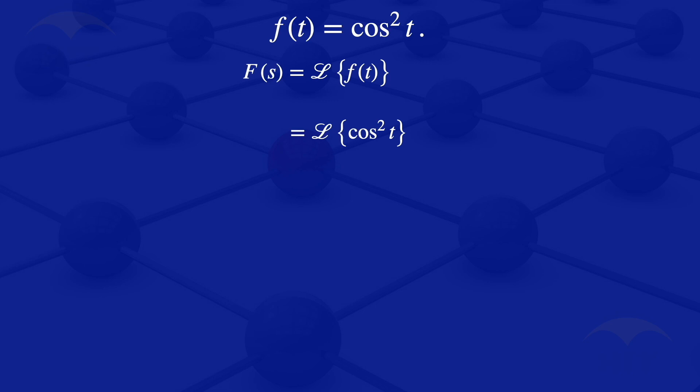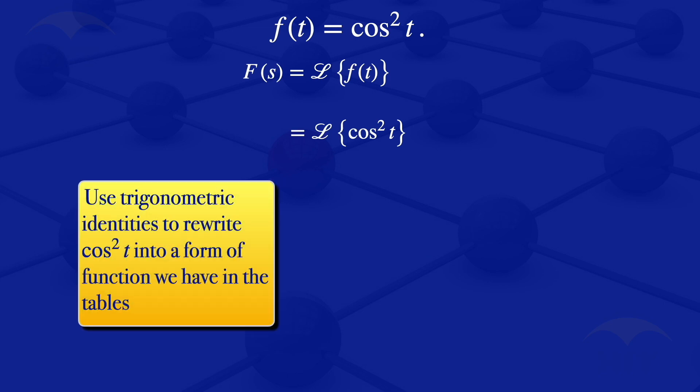When we look at our tables, we don't have a function of the form cosine squared t. What we have to do is rewrite that function using trigonometric identities. When we do that, we get that cosine squared t equals one half plus cosine of 2t divided by 2.